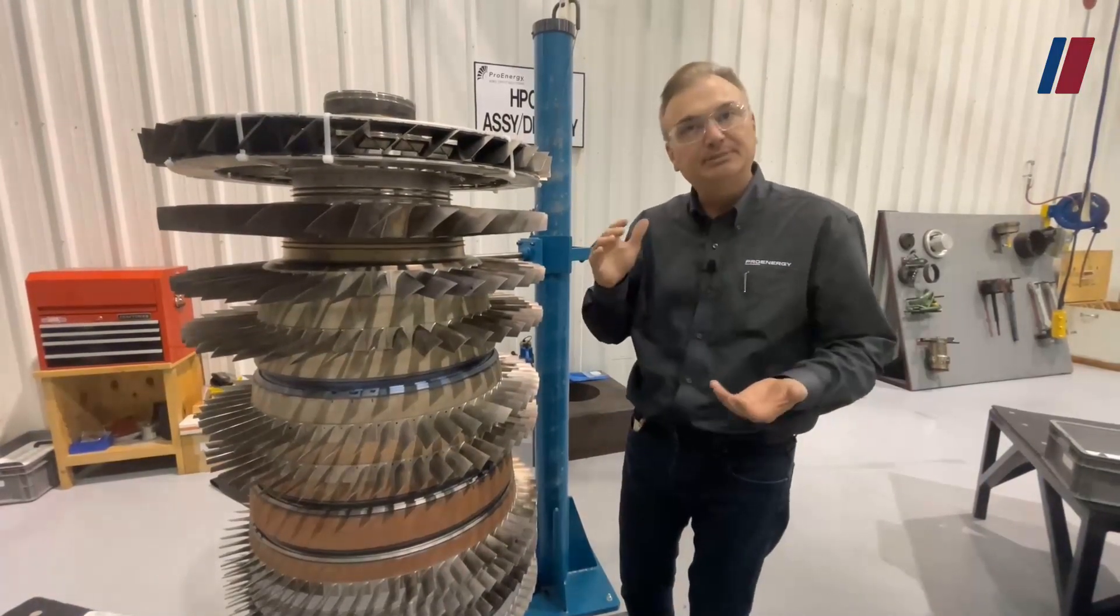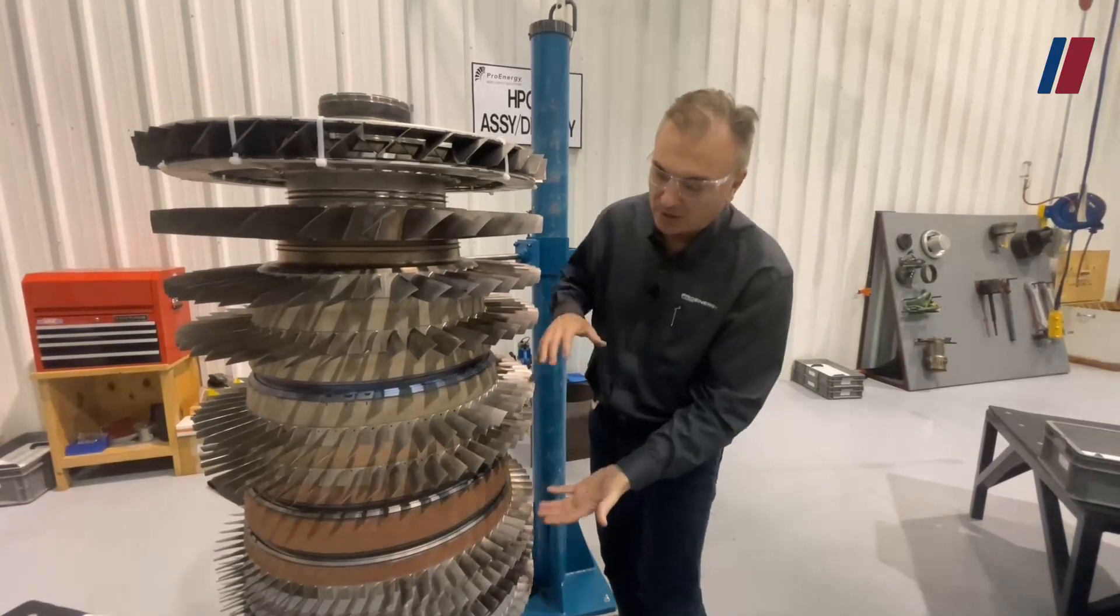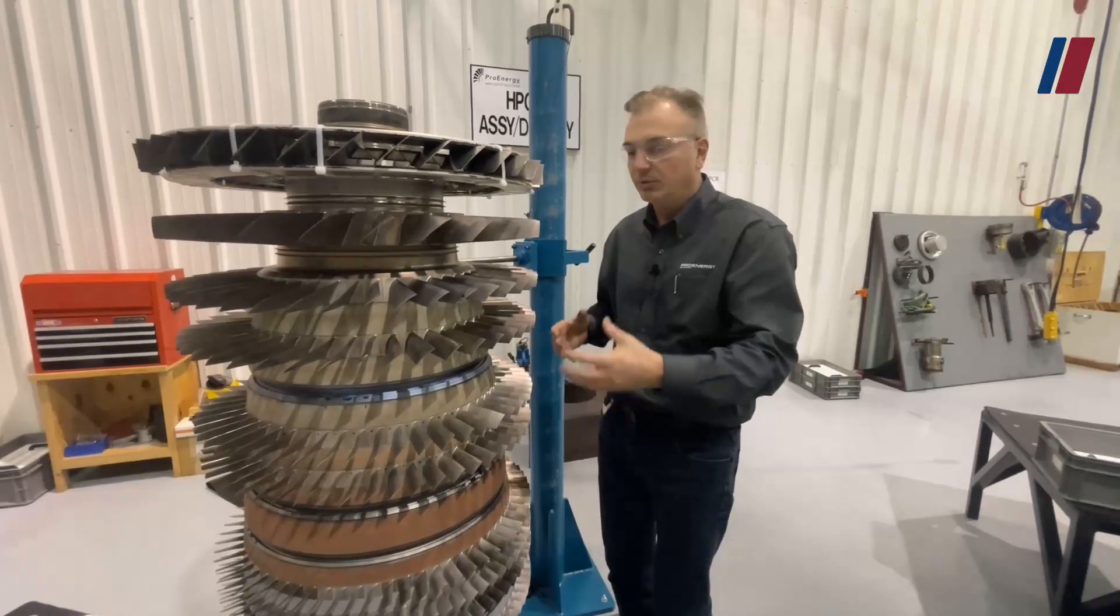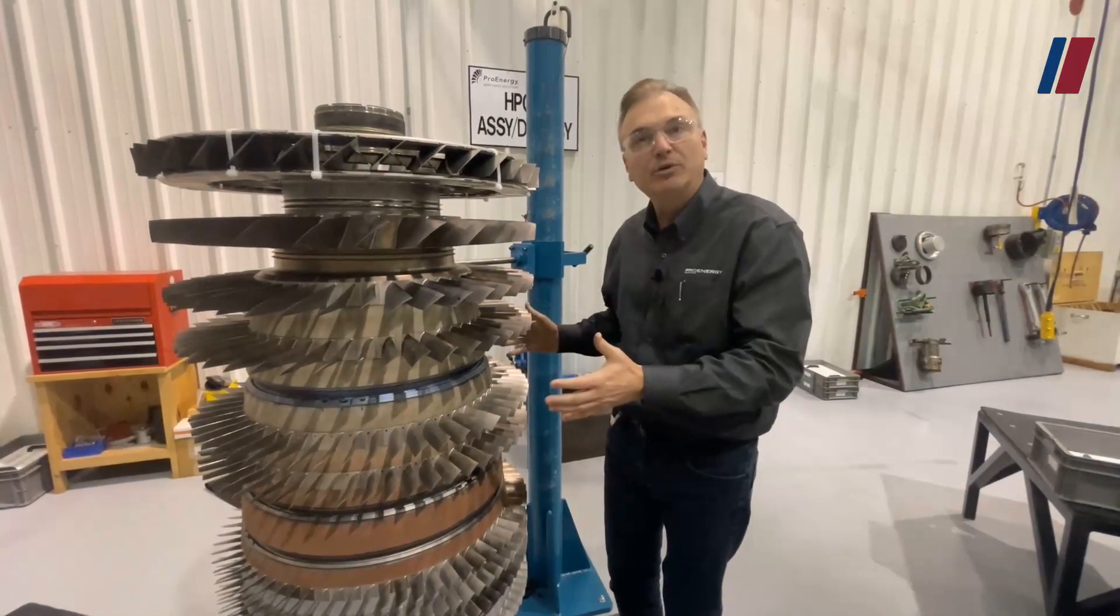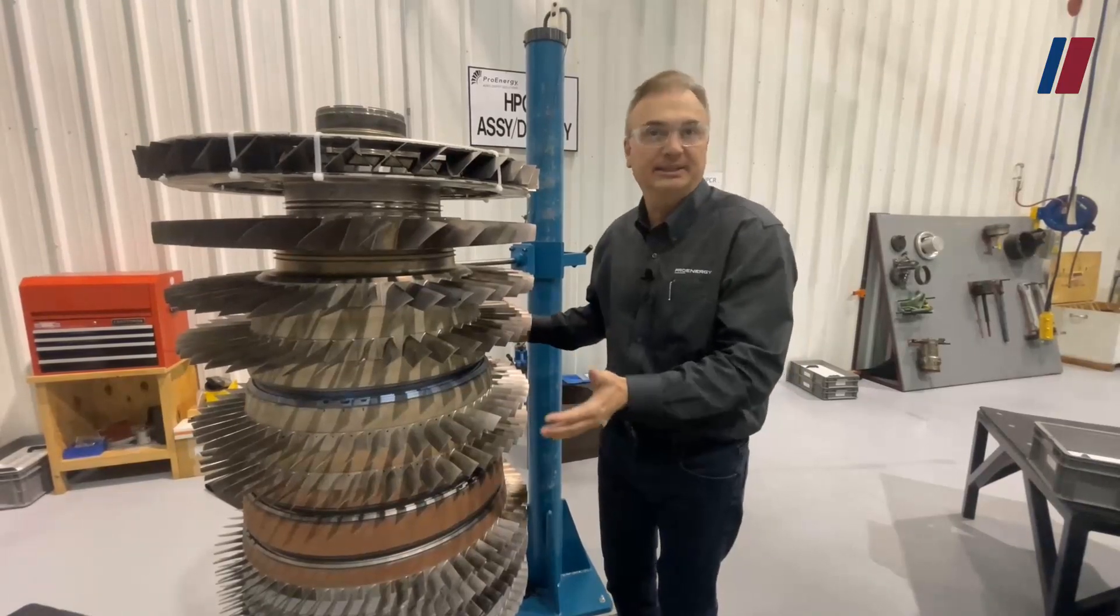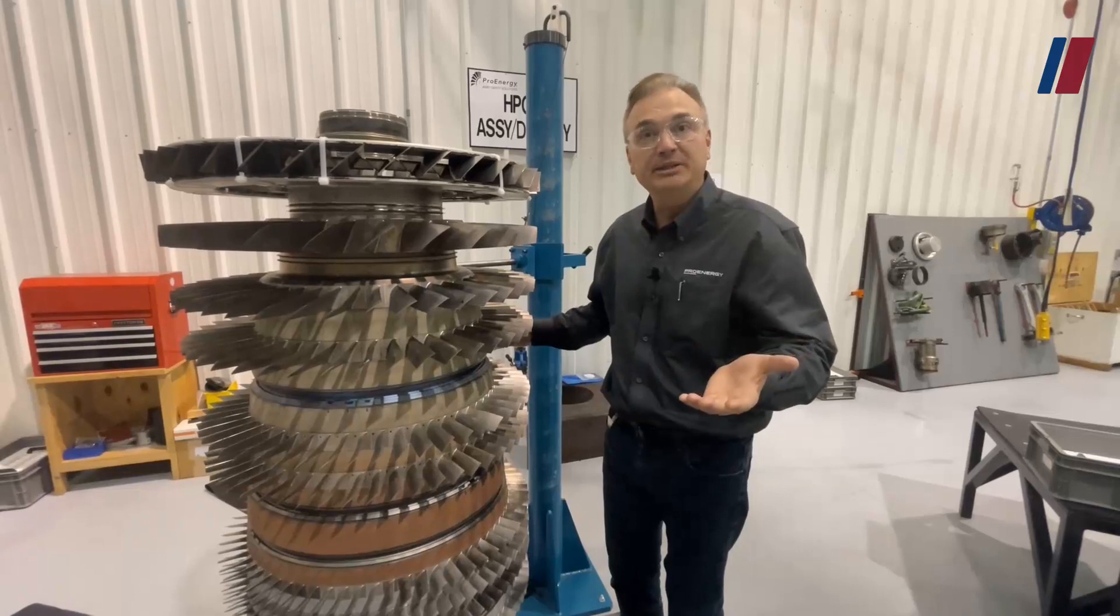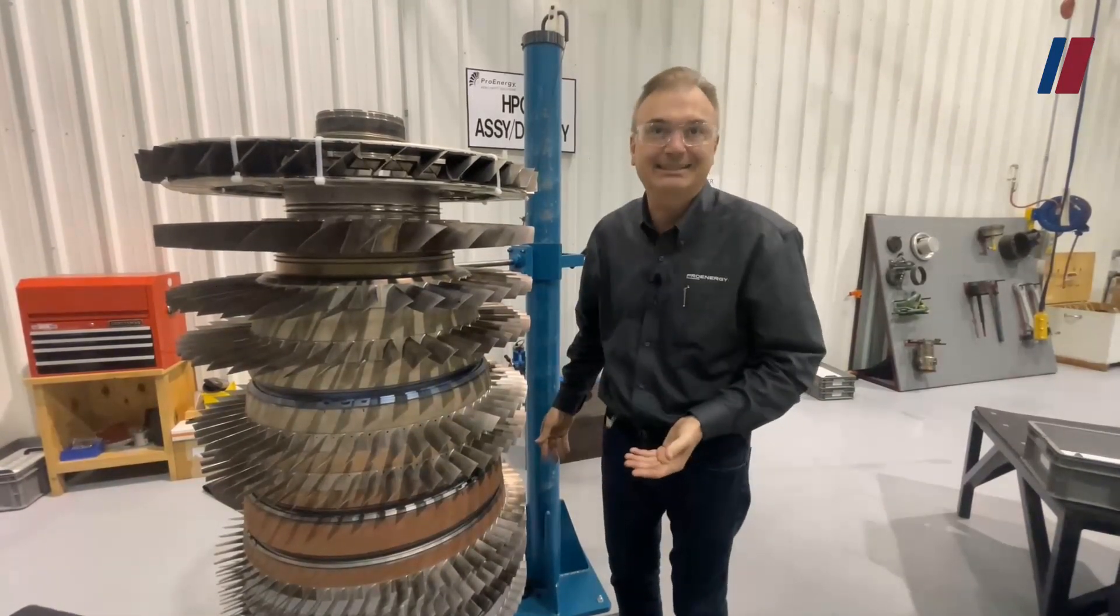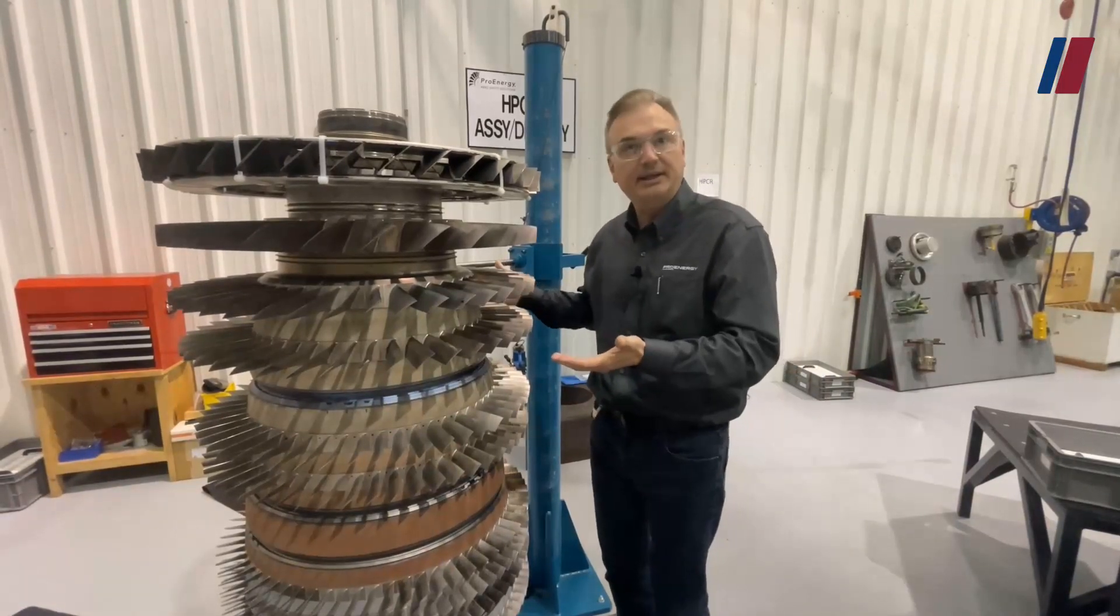The reason we do this is it reduces weight. And the reason we want to reduce weight, again, this engine is an aero-derivative engine. It was meant for flight. Other gas turbine engines, as an industrial turbine, may have several stages of discs. They don't care about the weight. On the CF-6, we do.